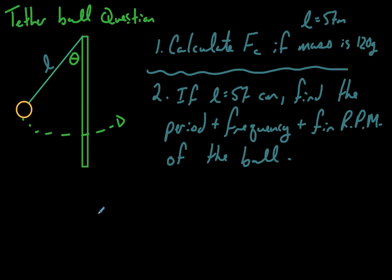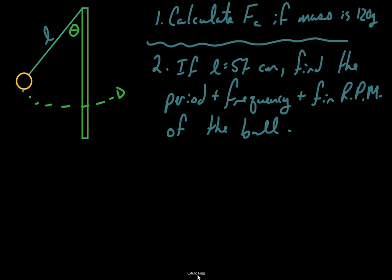Let's draw a free body diagram and think about what's going on. The ball is going around and around, and there's an interplay between forces. One force is gravity, pointing straight down at all times, equal to mg. You're also going to have a centripetal force acting on the ball, always pointing back towards the pole.